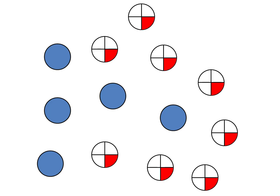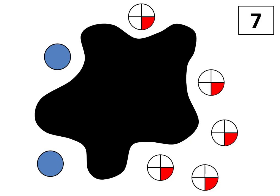The fraction splat question I'll answer today has a total of seven, marked in the corner. The question is: what is the value under the splat? How do you know? And most importantly, how else could you know? In this video I'll solve this question eight different ways.